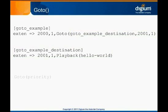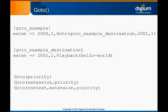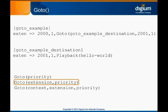You can give GoTo just the priority, the extension and priority, or the context, extension, and priority to jump to. The syntax for GoTo is a little unusual because the parameters are added at the left instead of the right. If there is a single parameter, it's a priority; if there are two parameters, the first is the extension and the second is the priority. The Asterisk developers decided that it was more important to list the address in descending order of significance. If no context or extension are defined, the current values are used. Priorities can be specified as either a number or a label.